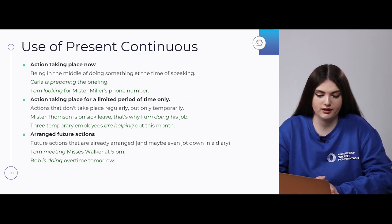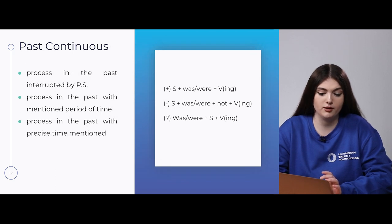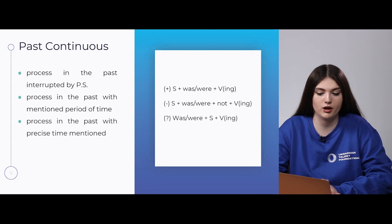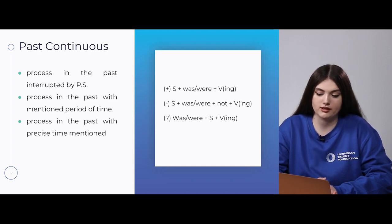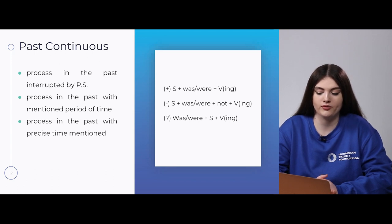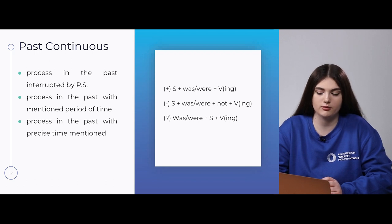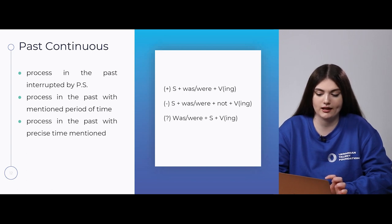Next is past continuous. There are no time markers for it, but we use past continuous for a process in the past interrupted by a past simple action, or for a process in the past with a mentioned period of time or a precise time mentioned. Structure: subject first, then auxiliary verb — in the past form it is was or were — then verb with -ing. For negative form the word NOT is added. For questions the auxiliary verb was/were is placed first.